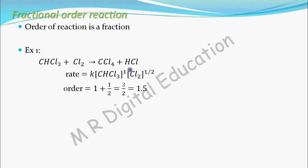So now order is sum of these two powers, that is 1 plus 1 by 2. 1 plus 1 by 2 equal to 3 by 2, that is equal to 1.5. So, order is 1.5. See, 1.5 is a fraction number. So, it is a fractional order reaction.